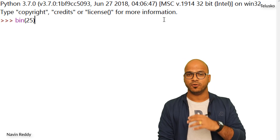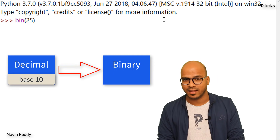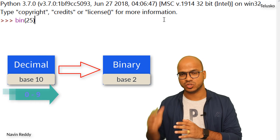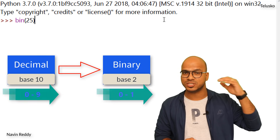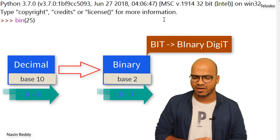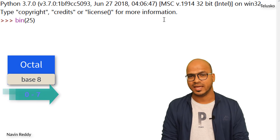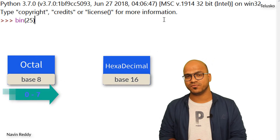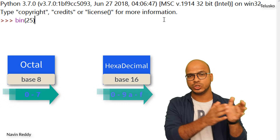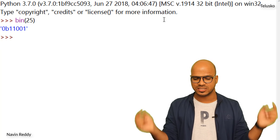When you say decimal system, the base of the system is 10, and in binary system the base is 2. In decimal we go from 0 to 9 — 10 digits. In binary we go from 0 to 1 — 2 digits, which is why we call them bits or binary digits. In octal we have 8 digits, from 0 to 7. In hexadecimal the base is 16: it starts at 0, goes to 9, then continues from A to F — 16 values in total.